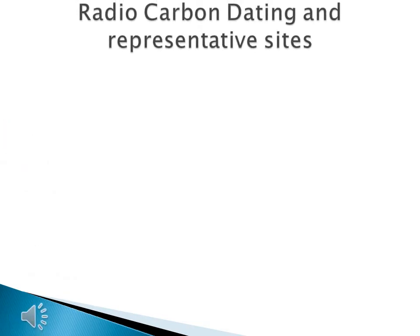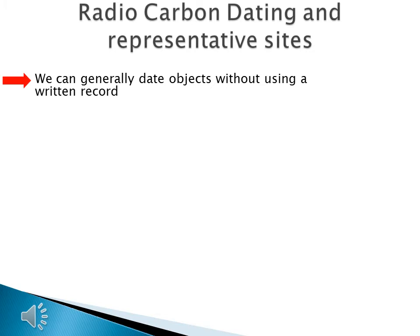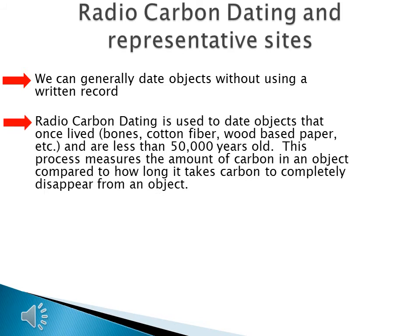Because of this prehistory versus history problem, scientists created other ways to date the age of an object so we can generally date objects without using a written record. One way is radiocarbon dating, which is used to date objects that once lived — like bones, cotton fibers, and wood-based paper — that are less than 50,000 years old. This process measures the amount of carbon in an object compared to how long it takes for all the carbon to completely disappear from it.